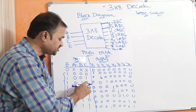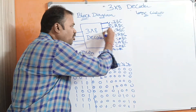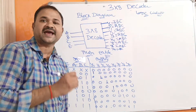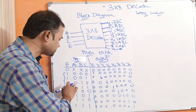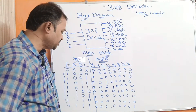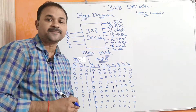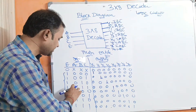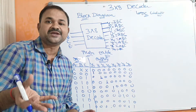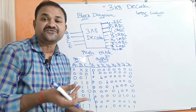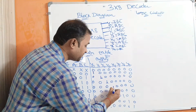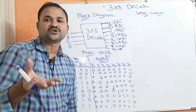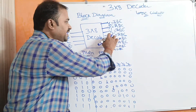Likewise when the inputs are 0, 1, 0 then Y2, the third output line, will be active. When Y2 is 1 then the input combination is 0, 1, 0, which is A bar, B, C bar. So Y2 equals A bar B C bar. So likewise when the inputs are 0, 1, 1 then the fourth output line Y3 will be active. When Y3 is active then the input combination is 0, 1, 1, so A bar, B, C. So Y3 equals A bar B C.